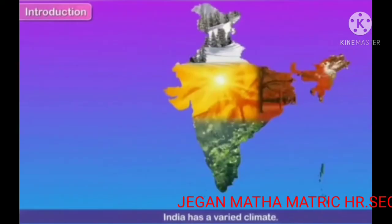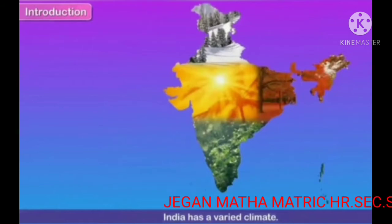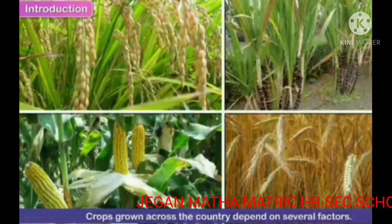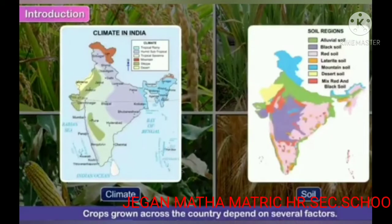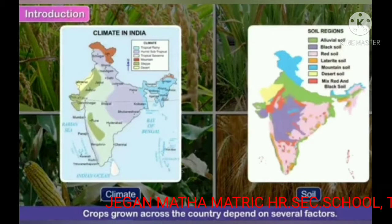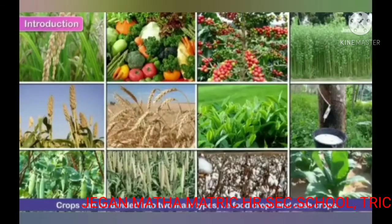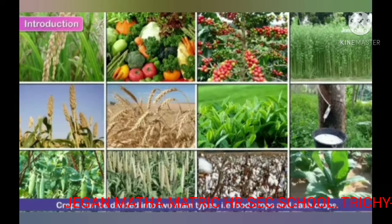India has a variety of climates. Crops grown across the country depend on several factors, including climate and soil. Crops can be divided into two main types.